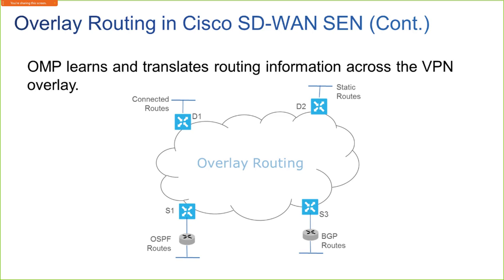As far as verification goes, it's relatively simple. If you want to verify what kind of peers you have, you can use the command show OMP peers. You can also use vManage to see that as well. From that output, you can see whether you have routes that are received from a particular peer, routes that are installed in a peer, routes that are sent to a peer, and so on.